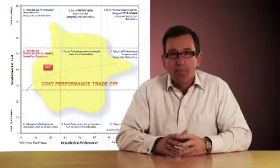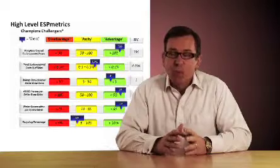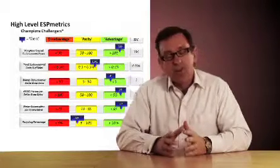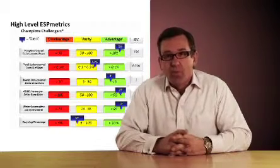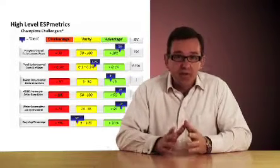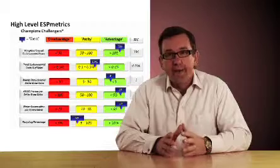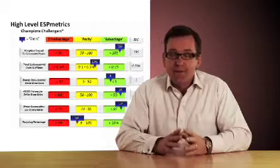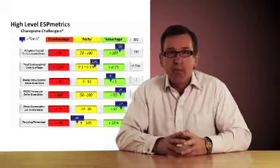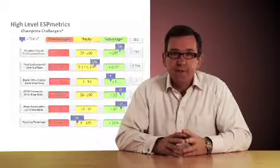Another example, high level metrics where we compare champions and challenges in the environmental space. This provides a report using the traffic light system of red, yellow and green to compare a company's performance across six high level and fundamental environmental KPIs that are required for every business.